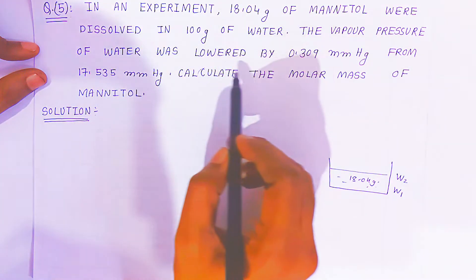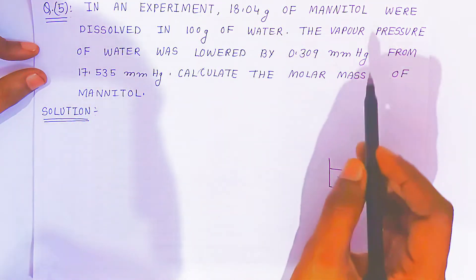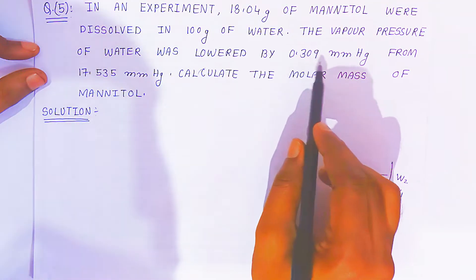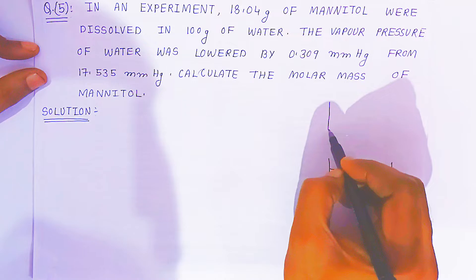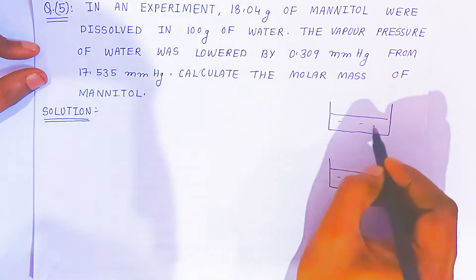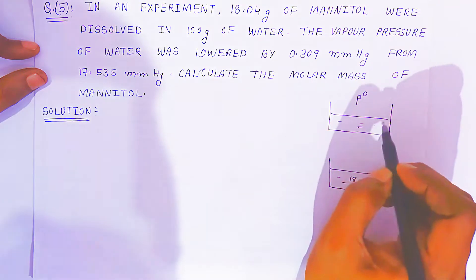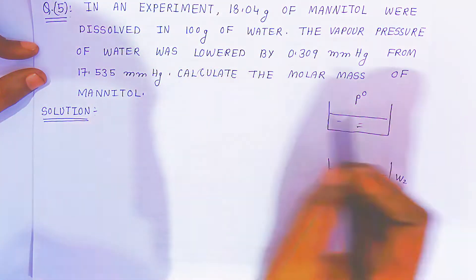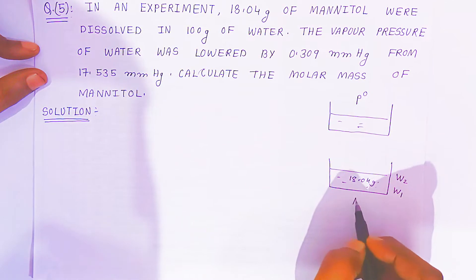The vapor pressure of water was lowered, meaning there is a difference in vapor pressure given — that is delta P = 0.309 mmHg. Before adding solute, the vapor pressure of pure water, P0, is given as 17.535 mmHg. We need to calculate the molar mass of mannitol.